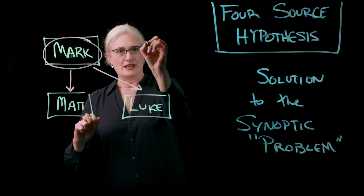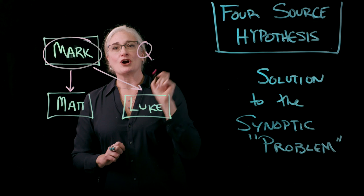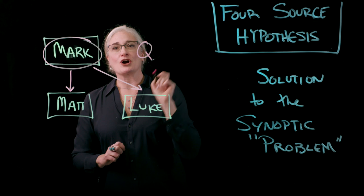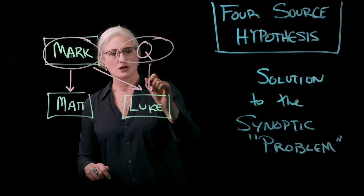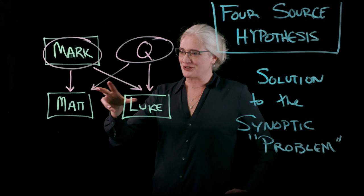So we, Biblical scholars are so clever with our names, we call it Q, which is the first letter of the German word, Kella, which means source because we're so clever like that. So Q is a source for Luke and for Matthew. By definition, Q does not show up in Mark, right?